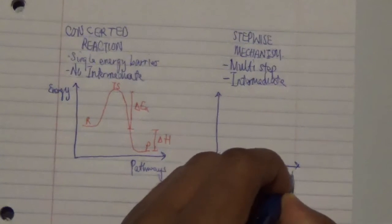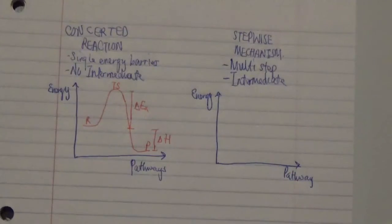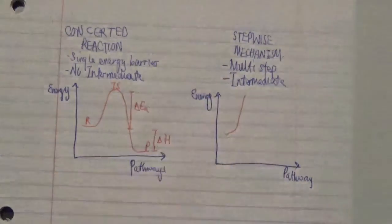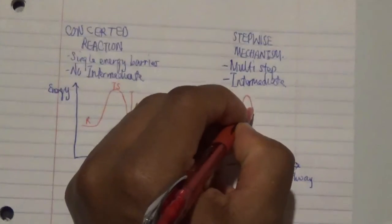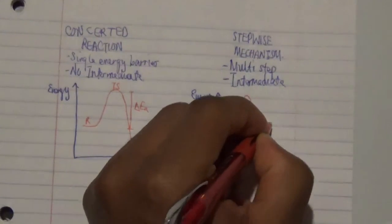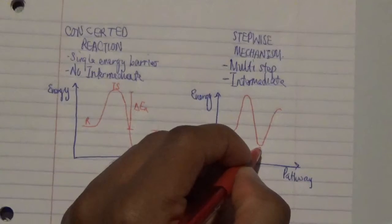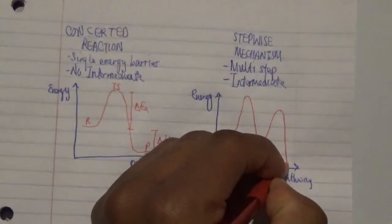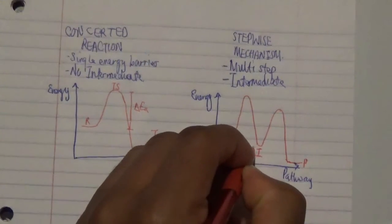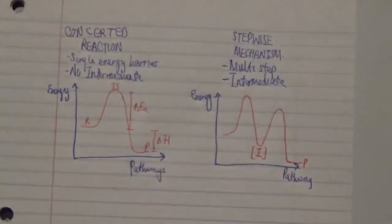Drawing the energy diagram for the stepwise mechanism: on the x-axis we have the reaction pathway, and on the y-axis we have energy. The reactant reaches a first transition state, then arrives at an intermediate. It then reaches a second transition state and arrives at another intermediate before proceeding to the final product.